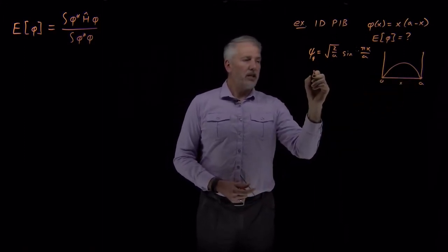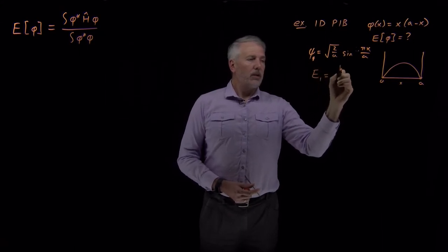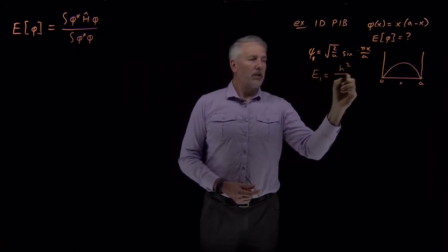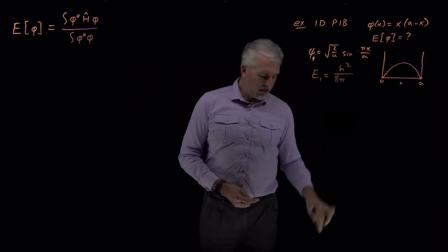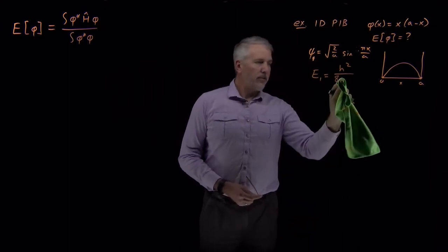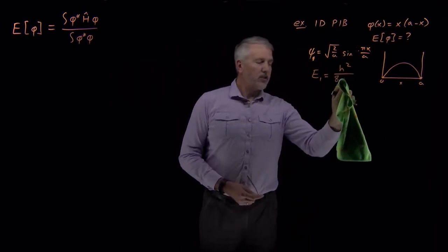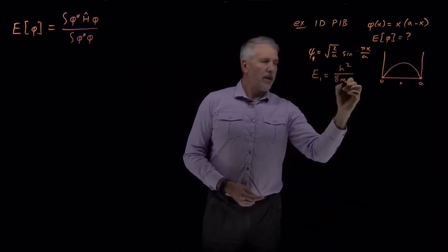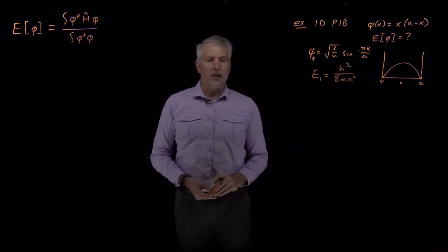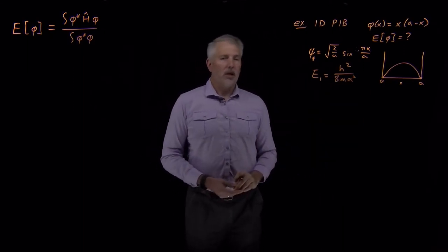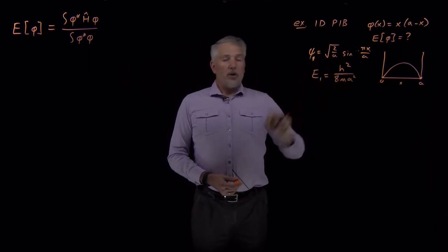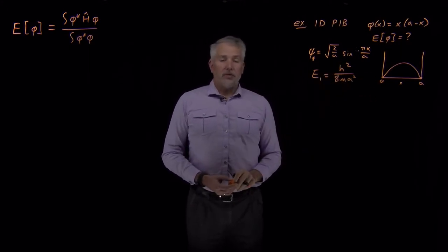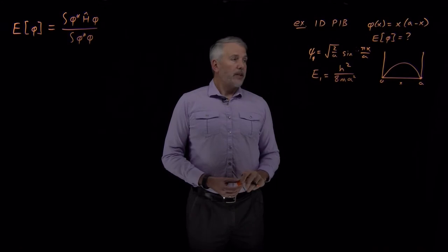The energy of that wave function is h squared over eight times the mass of the particle times the box length squared in the denominator. Our task is: let's say we don't know the right answer — we couldn't solve Schrödinger's equation or we don't feel like it.